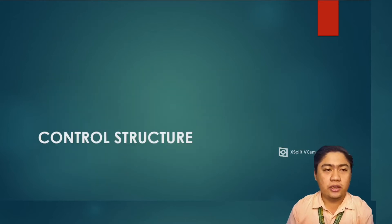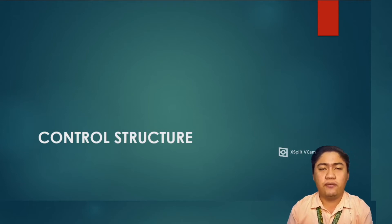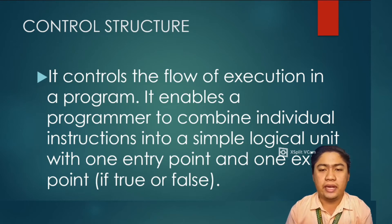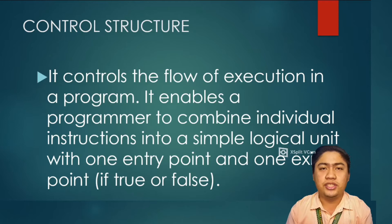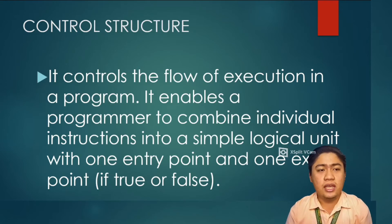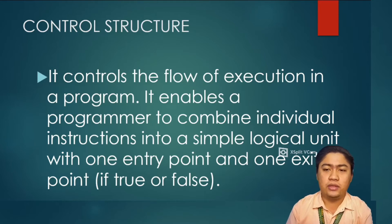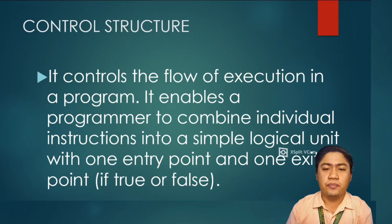Let's proceed with the control structure. A control structure controls the flow of execution in a program. It enables a programmer to combine individual instructions into a simple logical unit with one entry point and one exit point, which is the true and the false. A program cannot always be limited to a linear sequence of instructions.